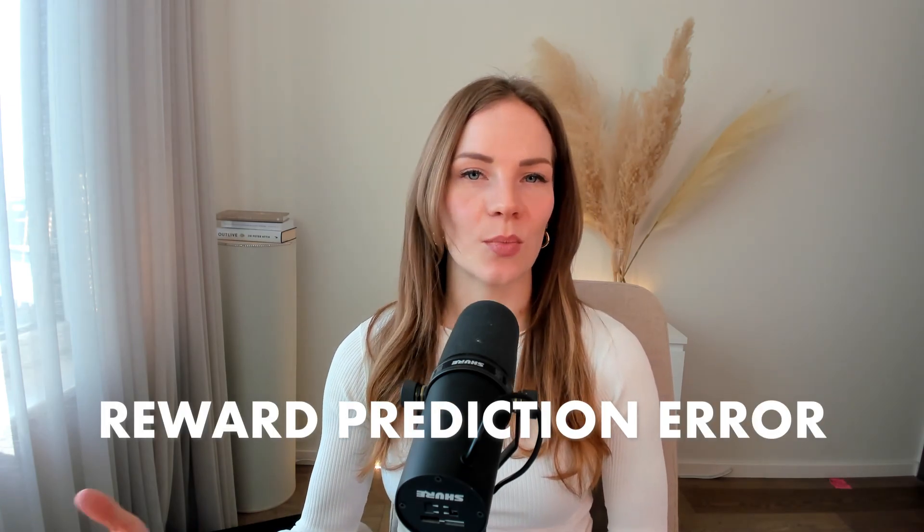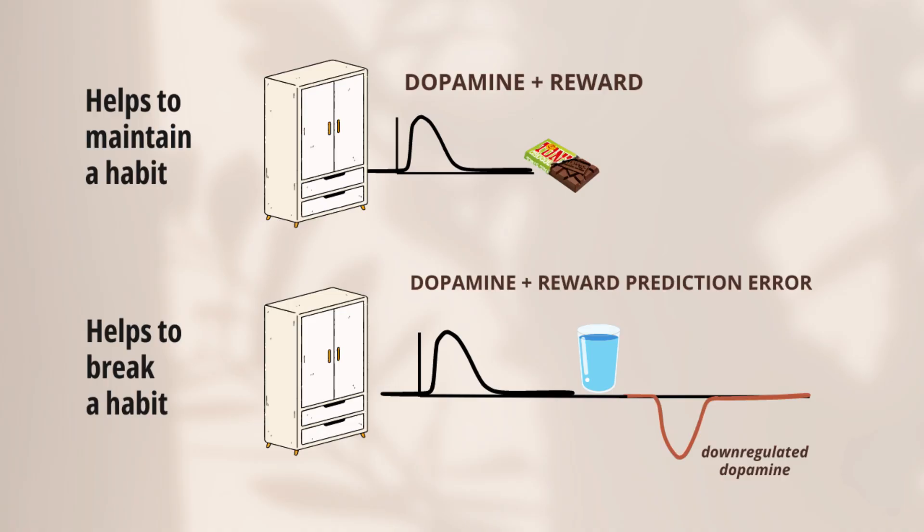What if you want to break a habit? Let's discuss snacking behavior. Breaking a habit requires a downregulation of mesocortical dopamine, achieved by forming what is called a reward prediction error — essentially breaking the pattern so the outcome is not what was expected. This causes your dopamine system to recalibrate.